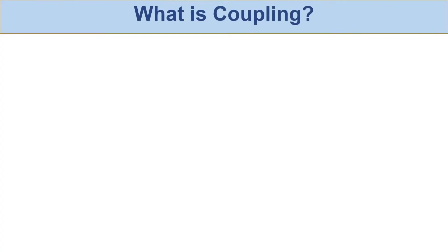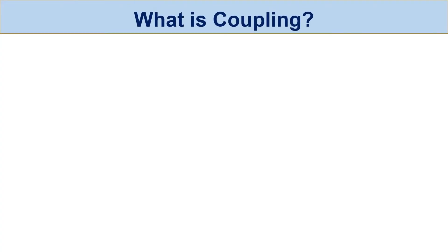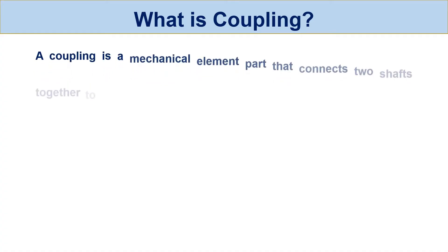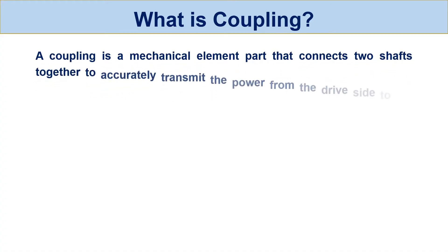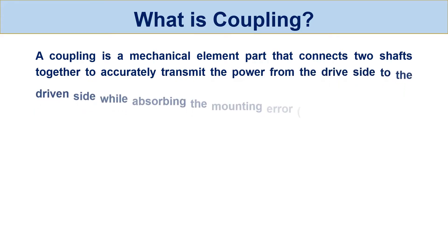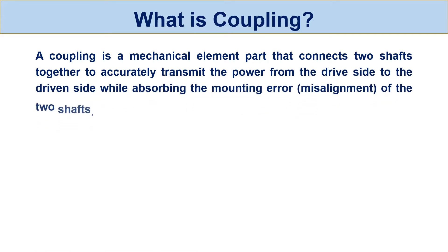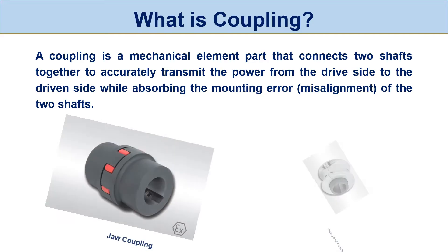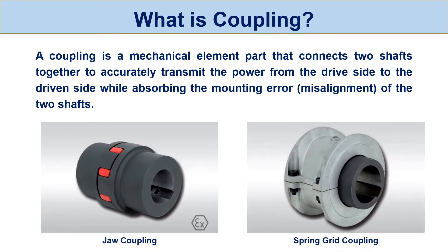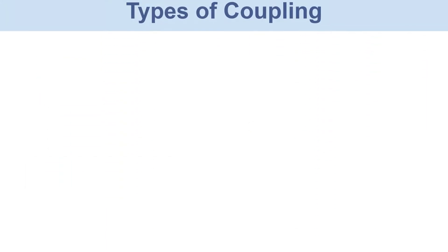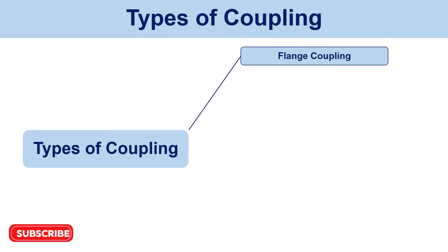Let us first define what is a coupling. A coupling is a mechanical element part that connects two shafts together to accurately transmit the power from the drive side to the driven side, while absorbing the mounting error of the two shafts. For example, jaw coupling and spring grid coupling are two of the most common types of couplings.